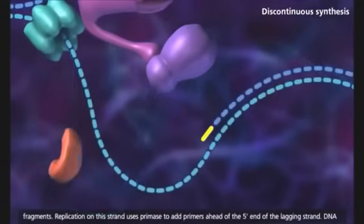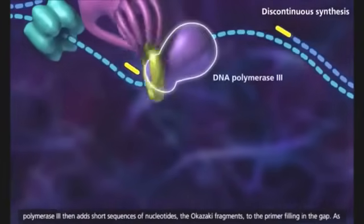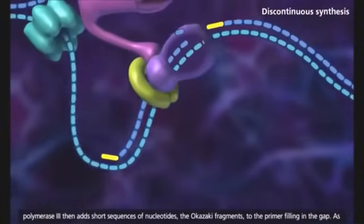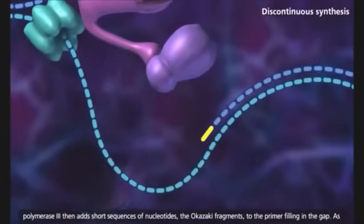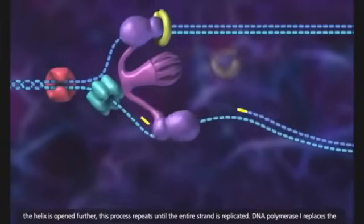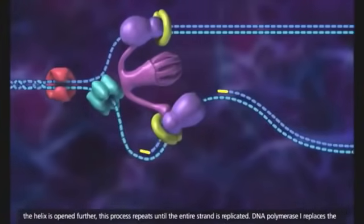Replication on this strand uses primase to add primers ahead of the 5' end of the lagging strand. DNA polymerase 3 then adds short sequences of nucleotides, the Okazaki fragments, to the primer, filling in the gap. As the helix is opened further, this process repeats until the entire strand is replicated.